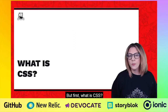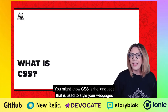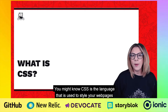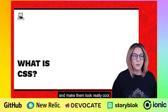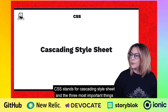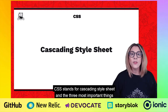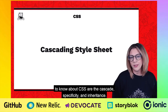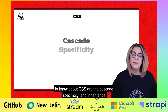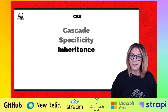But first, what is CSS? You might know CSS as the language that is used to style your web pages and make them look really cool. CSS stands for Cascading Style Sheet. And the three most important things to know about CSS are the Cascade, Specificity, and Inheritance.